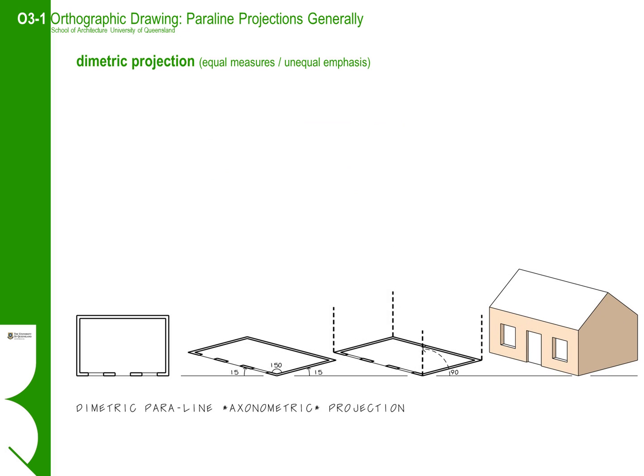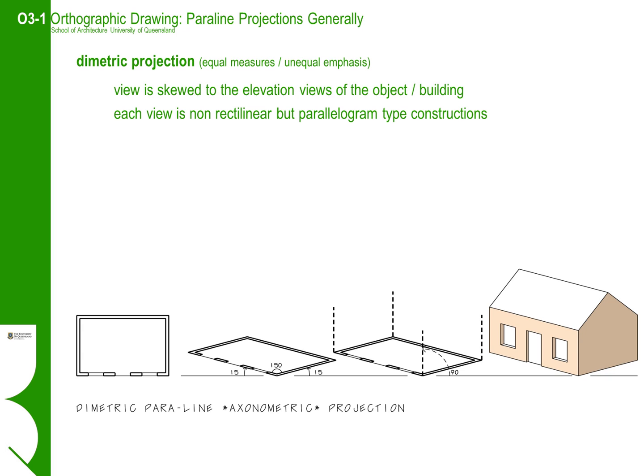A diametric view is a distortion of a pure isometric view that is flattened out to place more emphasis on the side views. The vanishing geometry left and right is equal, but the view emphasis is not equal. The vanishing angles in the x and y axis are symmetrical, like an isometric view, but at a much greater angle relative to each other. Like the isometric view, the view is skewed and non-rectilinear. The extreme rake of the vanishing geometry means that this is not a very commonly used parallel view projection.